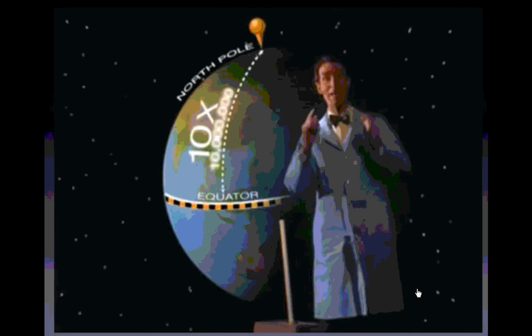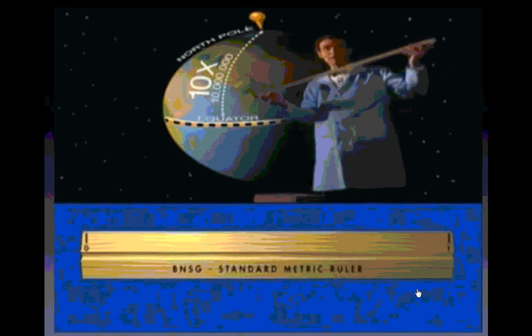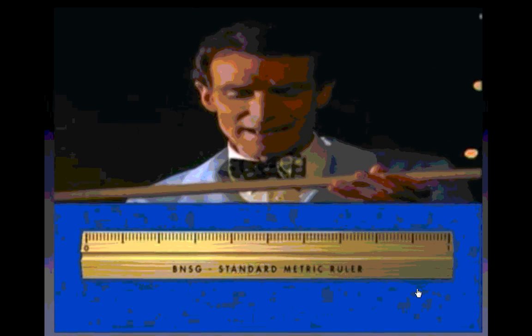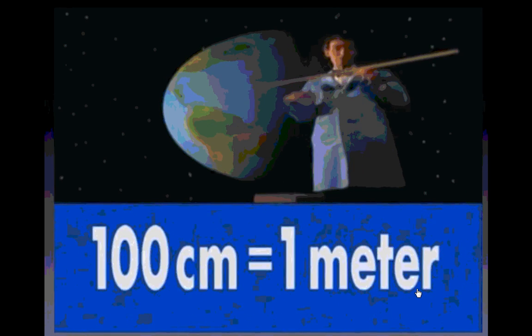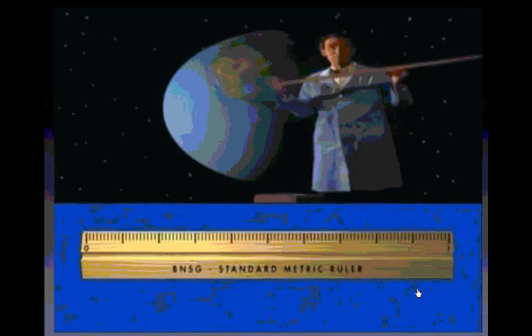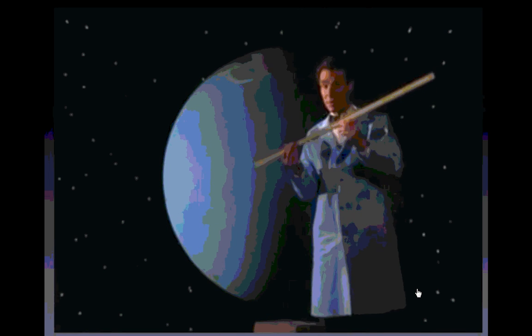So what we did is we looked at the Earth and divided the distance from the North Pole to the equator in tens, 10 million times, and we got the meter. We use 10 because humans have 10 fingers. You can keep dividing a meter by 10: divide by 100 and you get centimeters, by a thousand and you get millimeters. With a meter, you can measure just about anything.